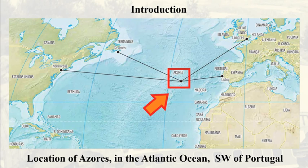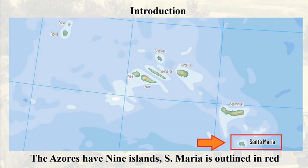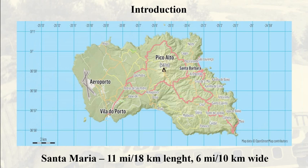A brief introduction of the setting where the crash occurred. The Azores Islands are in the Atlantic Ocean, 750 miles southwest of Portugal. This location made them a popular stopover for flights crossing the North Atlantic. The Azores are an archipelago with 9 islands. Santa Maria is located in the southeast, as seen outlined in red.